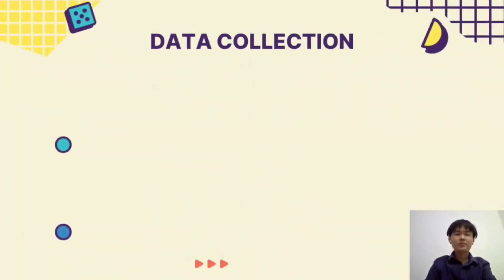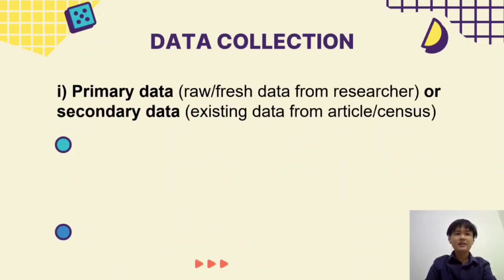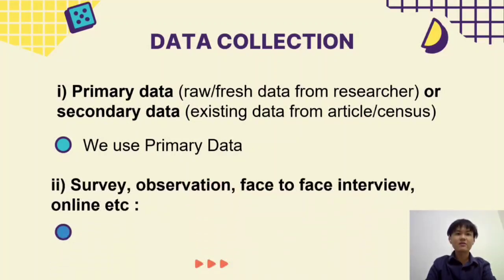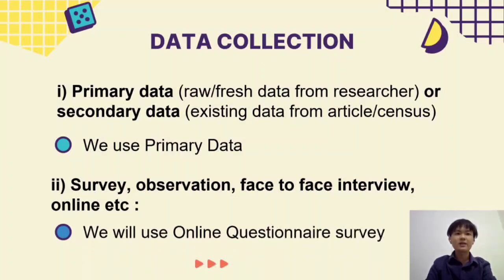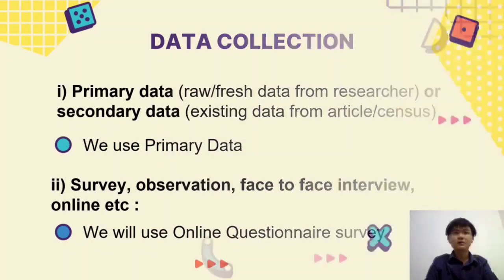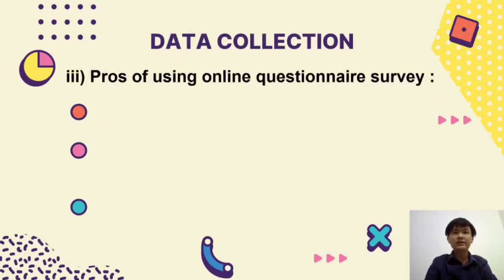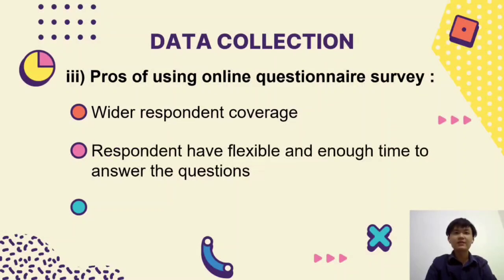I would like to present the data collection. In data collection, there are two kinds of data: primary data and secondary data. We use primary data for our research plan, and we will use an online questionnaire survey to collect data. There are three pros of using an online questionnaire survey: firstly, wider respondent coverage; secondly, respondents have flexible and enough time to answer the questions; and lastly, no calls are required.